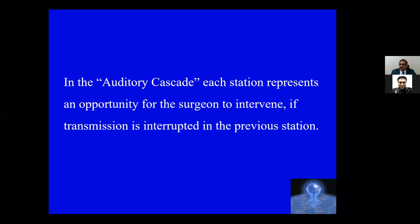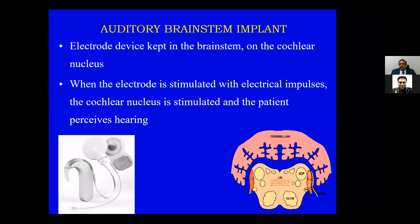If the cochlea is not available for some reason, we can go to a higher station — the cochlear nerve. Above that is the brainstem. The cochlear nucleus is a beautiful structure in the brainstem, and we can intervene there to restore continuity and provide an auditory sensation. This intervention at the brainstem level using an electrode is what we call an auditory brainstem implant.